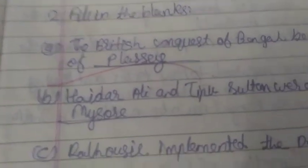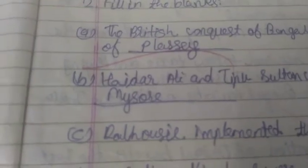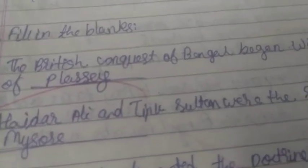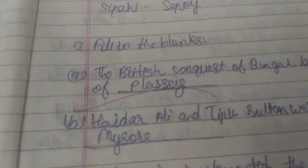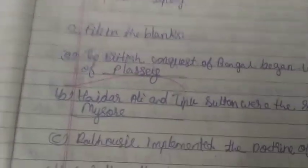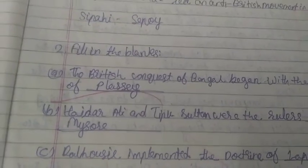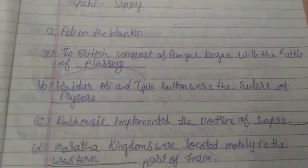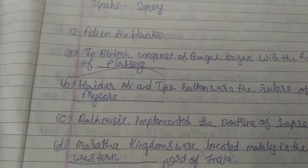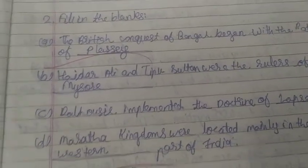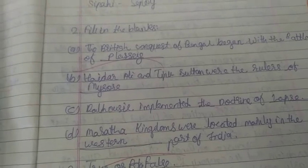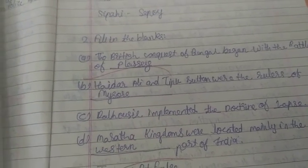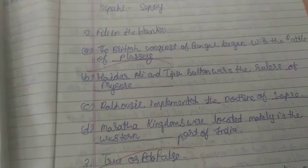Now second exercise: fill in the blanks. First, the British conquest of Bengal began with the battle of — student give the answer — Plassey, battle of Plassey. B. Hyder Ali and Tipu Sultan were the rulers of — all of you know that Tipu Sultan belonged to Mysore — M-Y-S-O-R-E, Mysore.